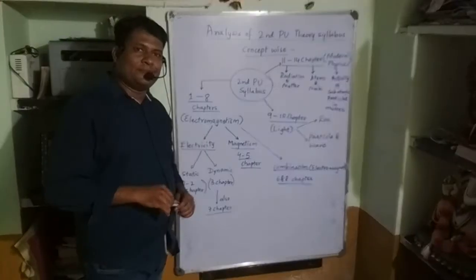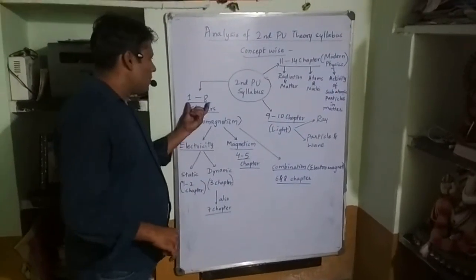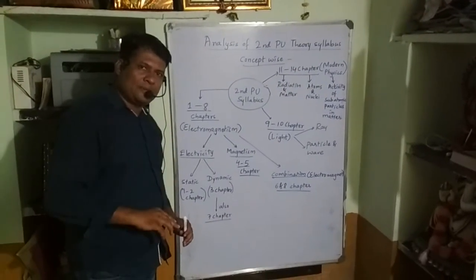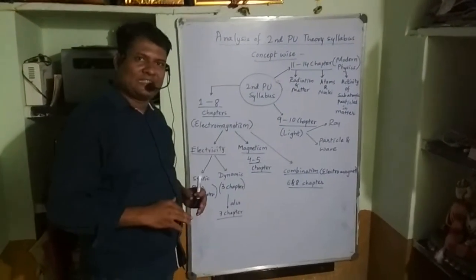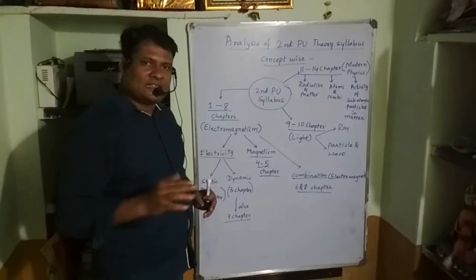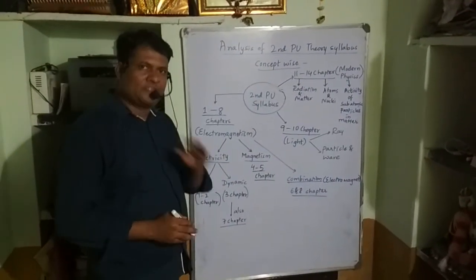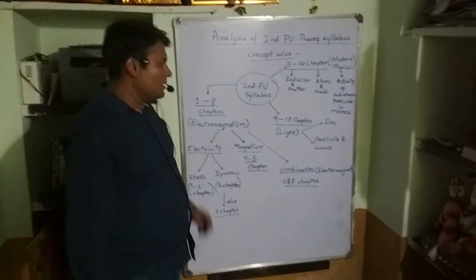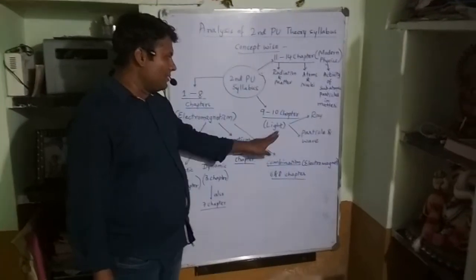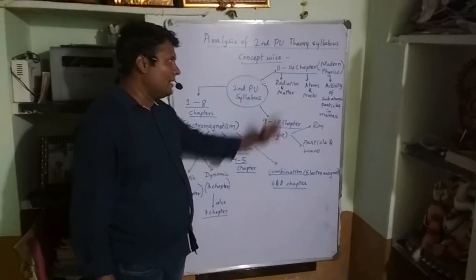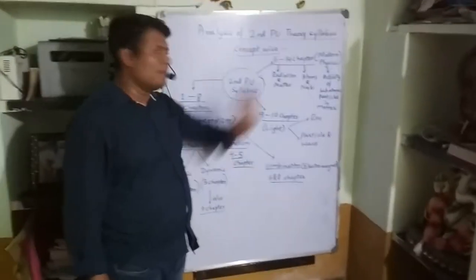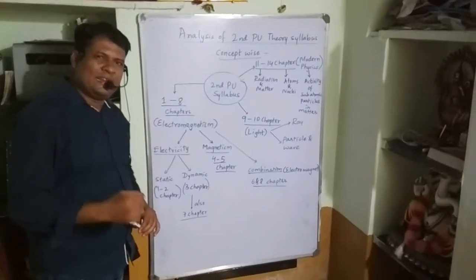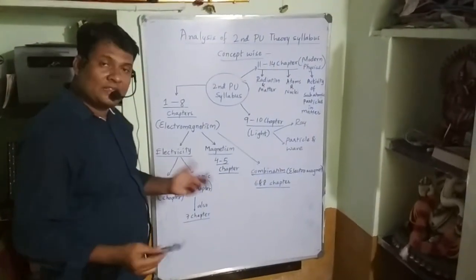The Electromagnetism part contains Chapters 1 to 8. We have two books in the second PUC syllabus: the first book contains eight chapters all about Electromagnetism, and the second book contains six chapters — Chapters 9 and 10 covering Light, and Chapters 11 to 14 covering Modern Physics.